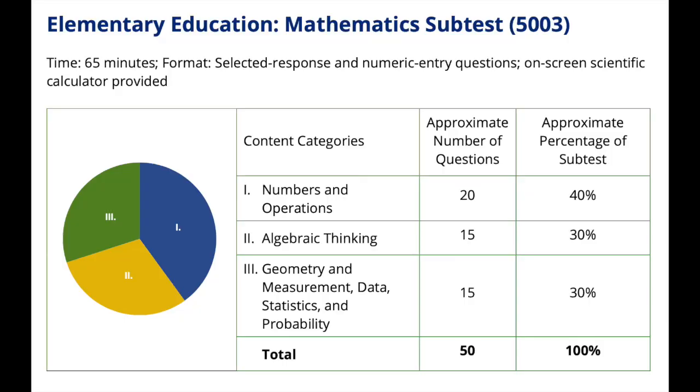The three categories for this exam are numbers and operations, algebraic thinking, and geometry, measurement, and statistics. Unfortunately, there is no formula sheet for this exam — I believe there was one for the Praxis Core Math, but there is none available for this exam. If they give you a problem that includes a formula, they would provide it. But I do recommend that you already have some formulas memorized and ready to go just in case.